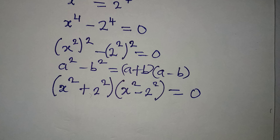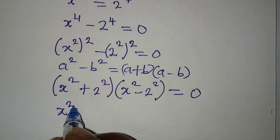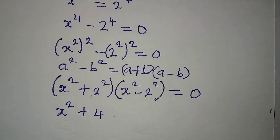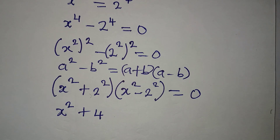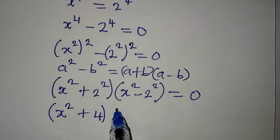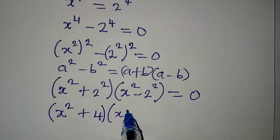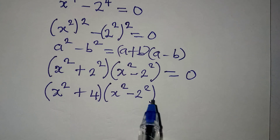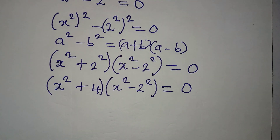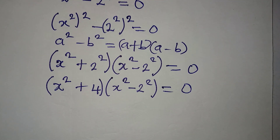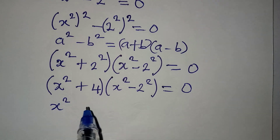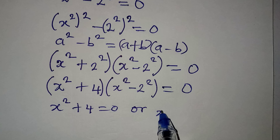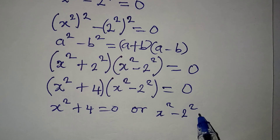We are applying difference of two squares. Remember that this is the same thing as x squared plus 4, because 2 squared gives us 4. And in the second bracket, we still have x squared minus 2 squared. I also want to apply difference of two squares there. So we have x squared plus 4 equals 0, or x squared minus 2 squared equals 0.